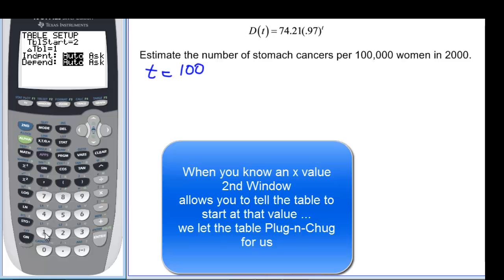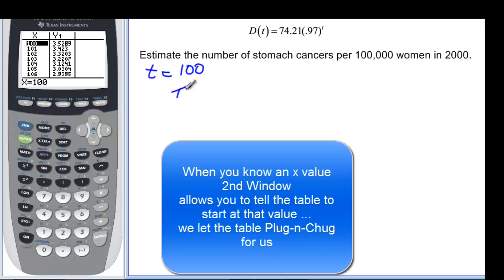I can tell my table that I want it to start at 100, so I can see when X is 100. And in my table, table says that we have 3.5289.